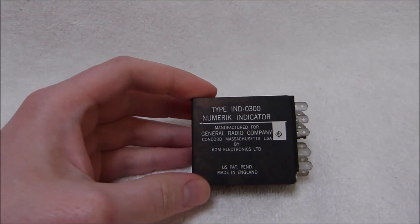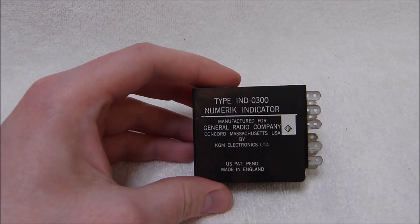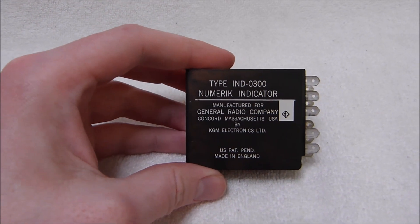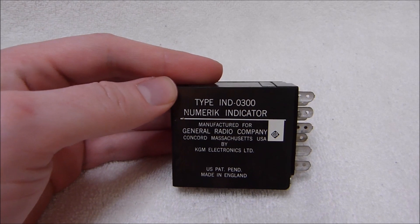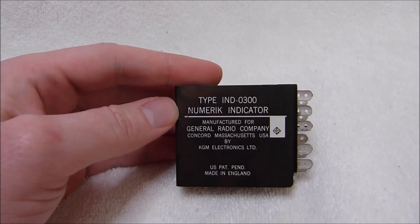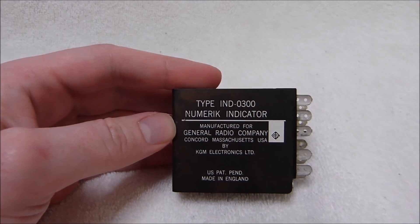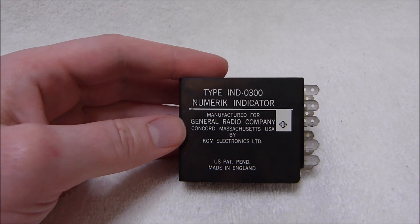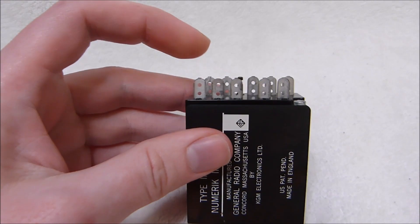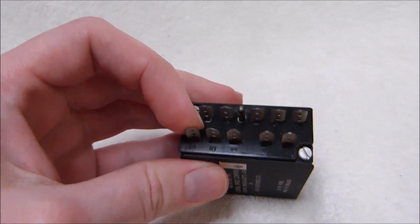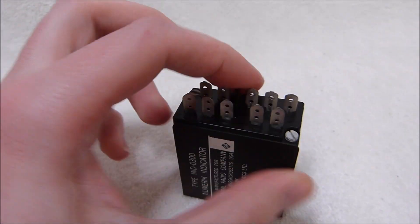Here's one of these spare edge-lit displays I have for my edge-lit clock I showed a little while ago. It's a type IND0300 numeric indicator. It was manufactured for the General Radio Company by KGM Electronics Limited in England. You can see this particular one has never been used as the terminals have never been soldered.